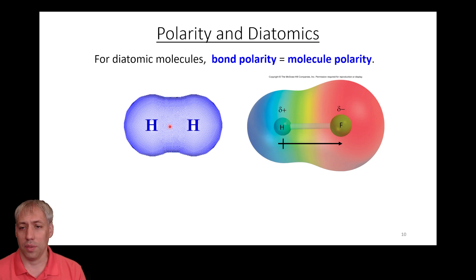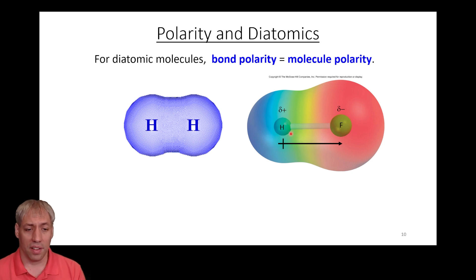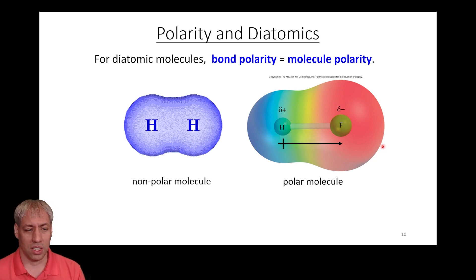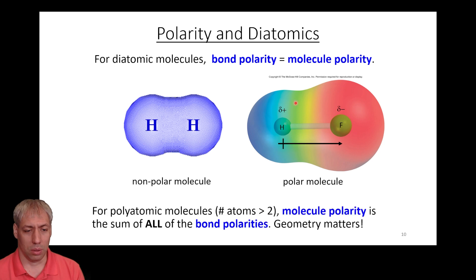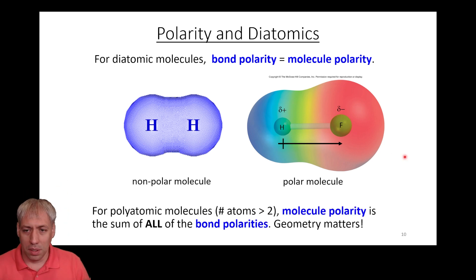For H₂, the delta electronegativity is zero — no polarity difference, no charge difference, dipole moment of zero. For HF, F is much more electronegative — partial negative on F, partial positive on H. You can see the vector and direction: HF is a polar molecule, H₂ is a nonpolar molecule. One has a neutral distribution of electron clouds; the other gives one side partial negative and the other side partial positive.